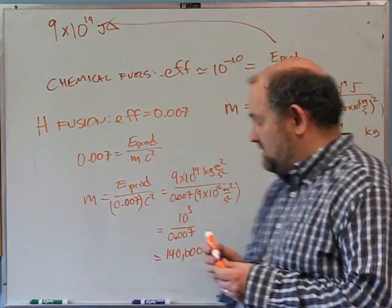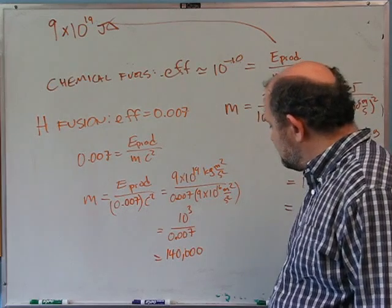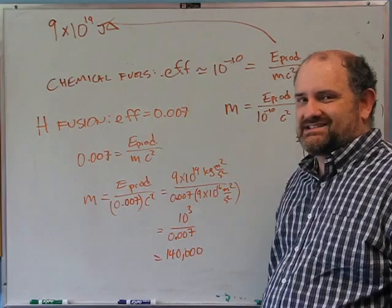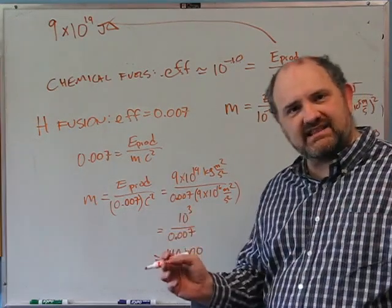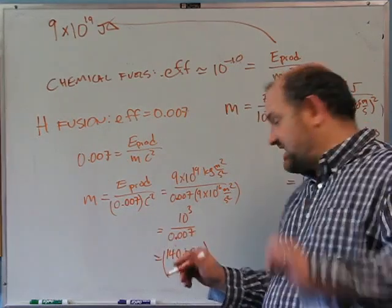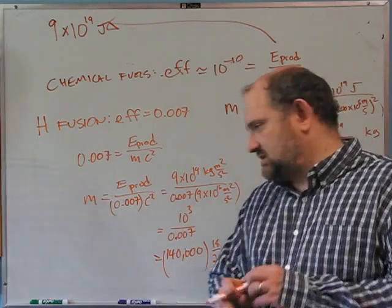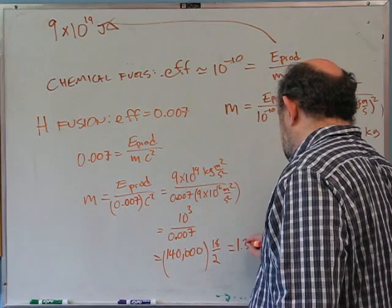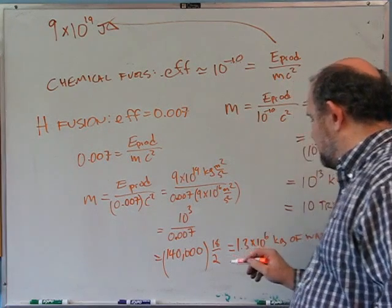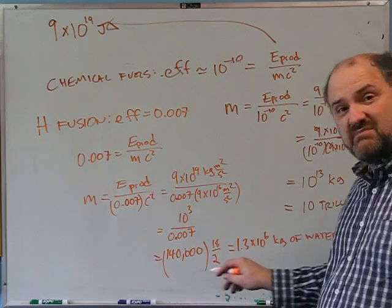140,000 kg of hydrogen is much less than 10¹³ kg. To get 140,000 kg of hydrogen from water (H₂O, mass 18, of which 2 is hydrogen), multiply by 9: that's about 1.3 million kilograms of water. Converting using density of water (1 g/cm³ = 10³ kg/m³): 1.3×10⁶ kg ÷ 10³ kg/m³ = 1300 cubic meters of water.